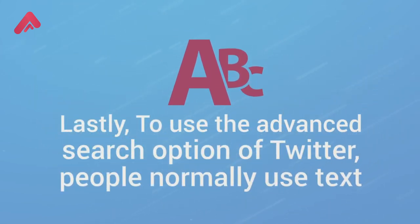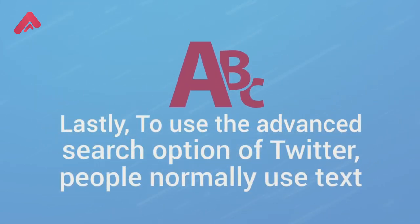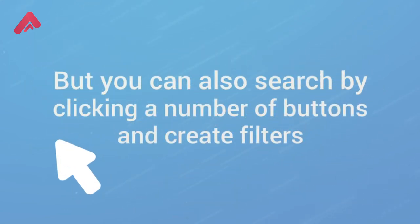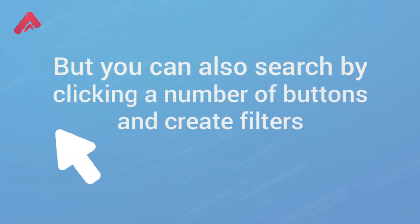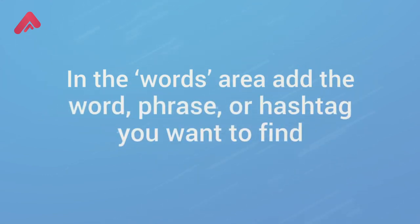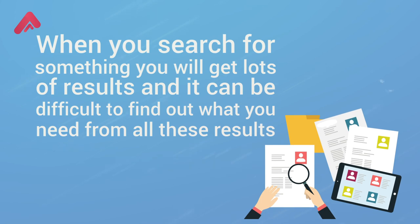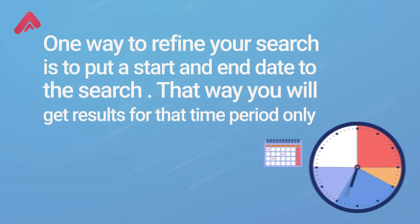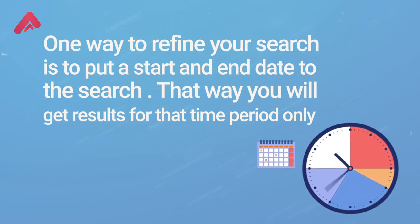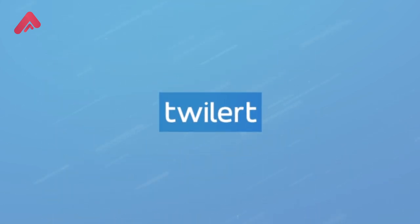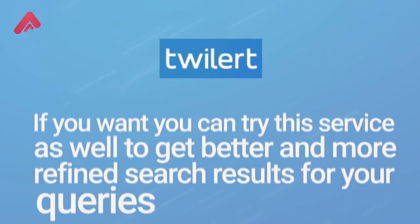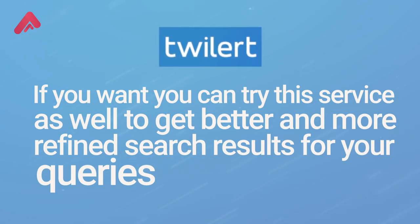To use the advanced search option of Twitter, people normally use text, but you can also search by clicking a number of buttons and creating filters. In the words area, add the word, phrase, or hashtag you want to find. When you search for something you will get lots of results, and it can be difficult to find what you need. One way to refine your search is to put a start and end date. That way you will get results for that time period only. Twilert, a paid service, can give you even further advanced search on Twitter if you want more refined results.